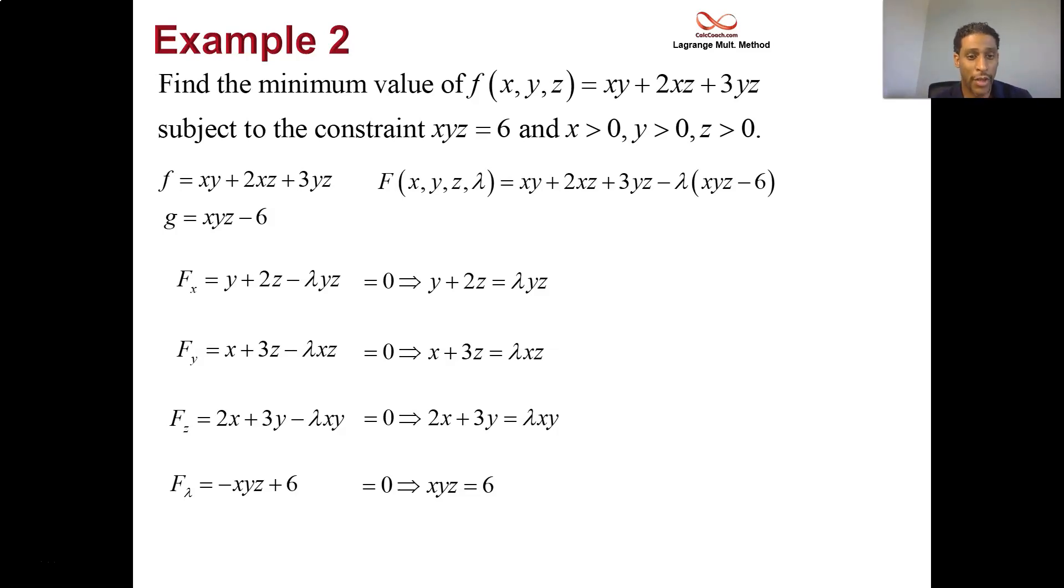All right, so what this leads to is, f x equals 0 leads to lambda being equal to y plus 2z over yz. f y equals 0 leads to x plus 3z over xz being equal to lambda. And then fz being equal to 0 leads to 2x plus 3y over xy equal to lambda.